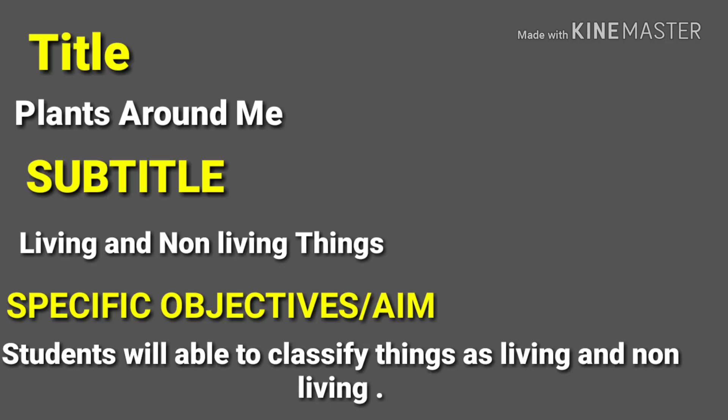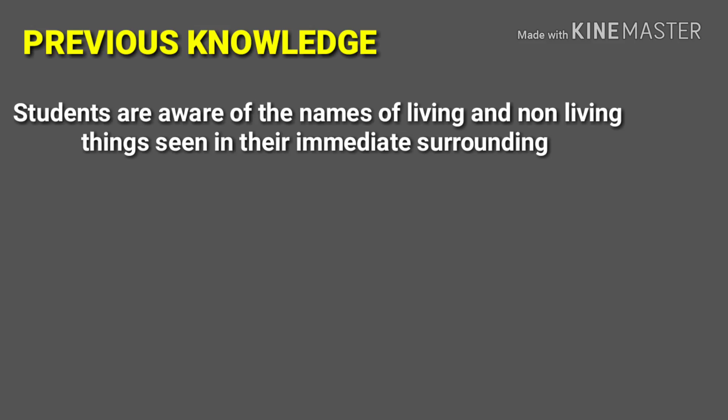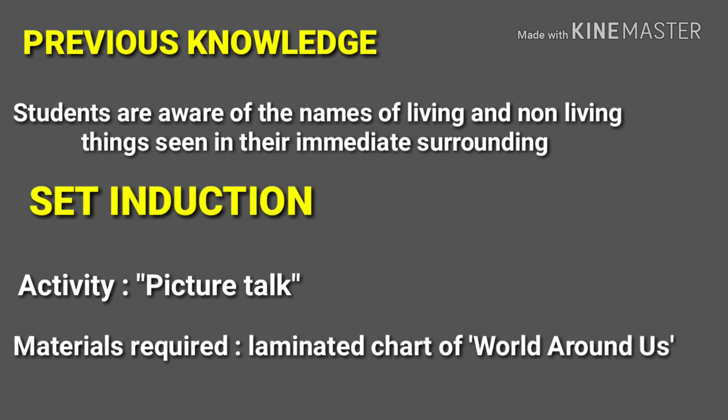First of all, in your lesson plan, you must begin with the title. For example, Plants Around Me. Then, subtitle: Living and Non-Living Things. Then, Specific Objectives or AIM: Students will be able to classify things as living and non-living. Previous Knowledge: Students are aware of the names of living and non-living things seen in the immediate surroundings.